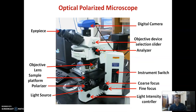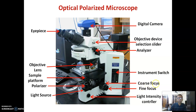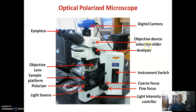This is another advanced optical microscope used for birefringence measurement. It has a light intensity controller, a light source, and a fine focus for the polarizer and sample. The sample platform holds the specimen, with coarse and fine focus controls. There are objective lenses, a removable analyzer that can be inserted or removed as needed, an objective selector, a digital camera, and an eyepiece.